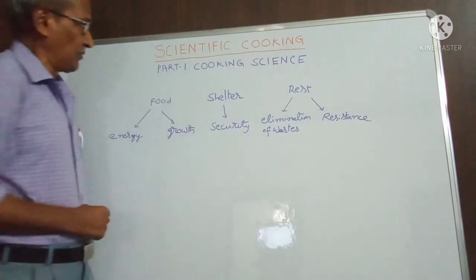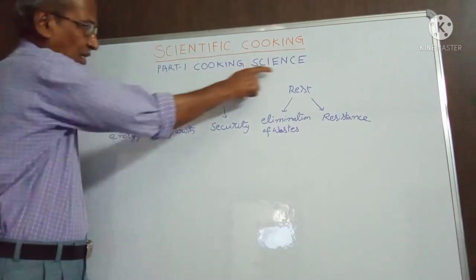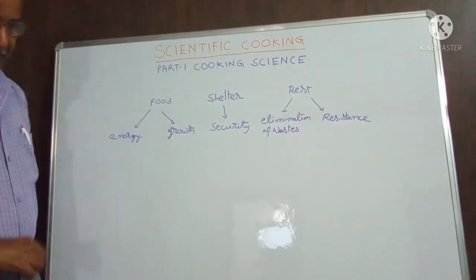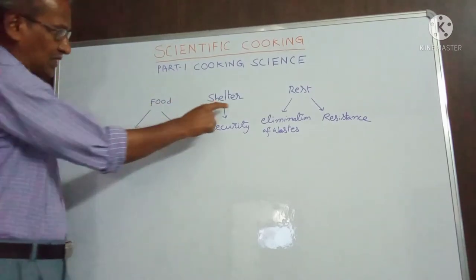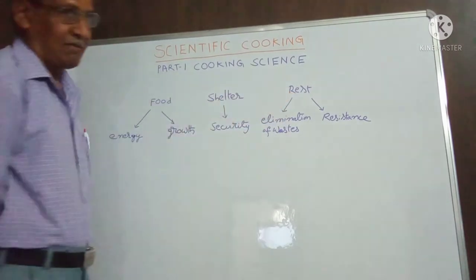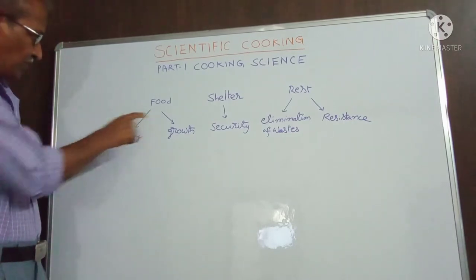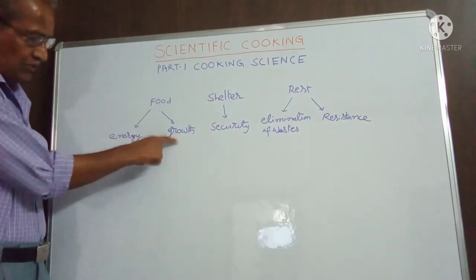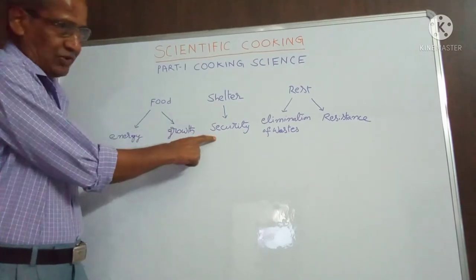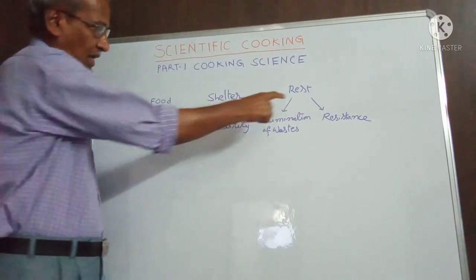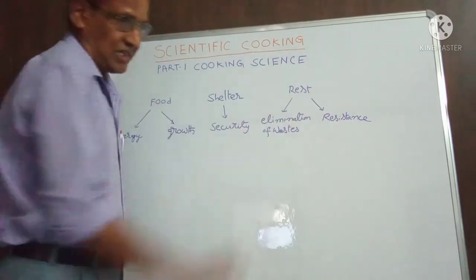Scientific Cooking Part 1 - Cooking Science. Man needs food, shelter, and rest for his survival: food for energy and growth, shelter for security, and rest for elimination of waste and resistance.